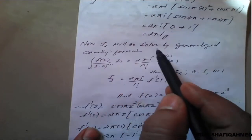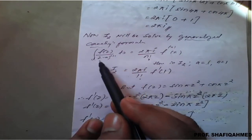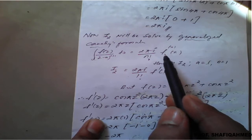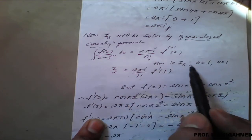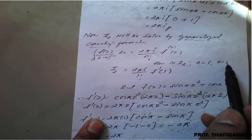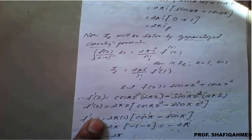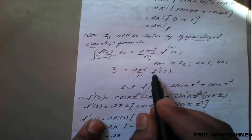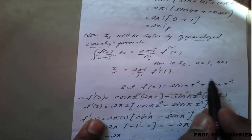For I2 we apply the generalized Cauchy's integral formula: the integral of f(z)/(z−a)^(n+1) dz = (2πi / n!) · f⁽ⁿ⁾(a). Here a = 1 and n = 1 because the denominator is (z−1)², which means n+1 = 2, so n = 1. The right-hand side becomes 2πi / 1! · f'(1).